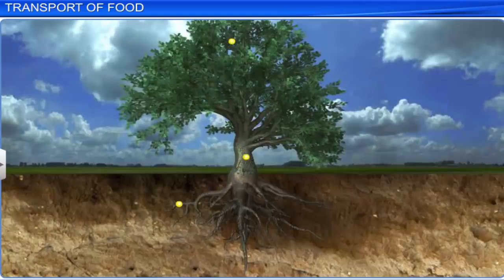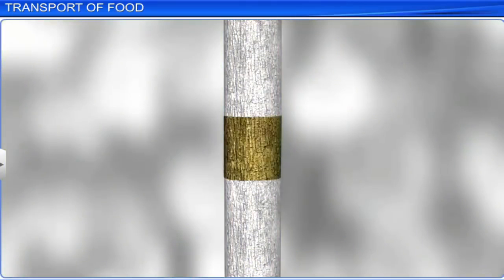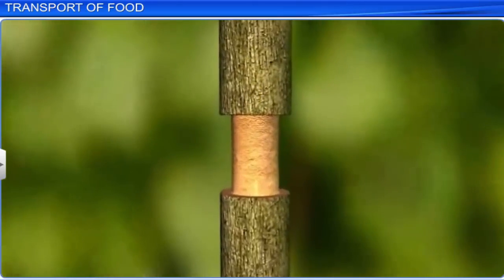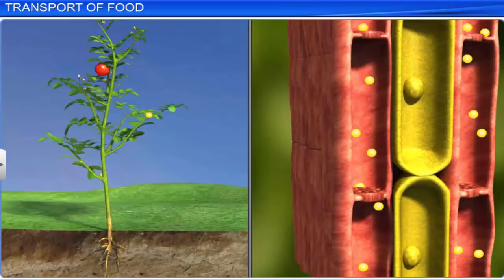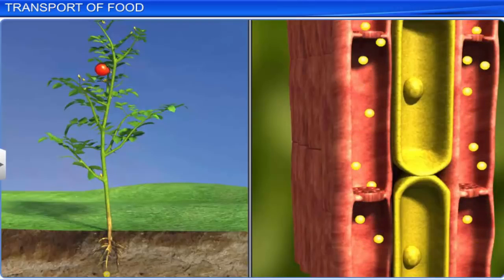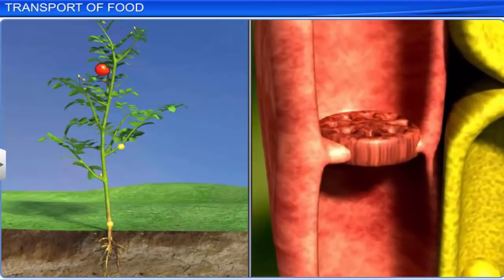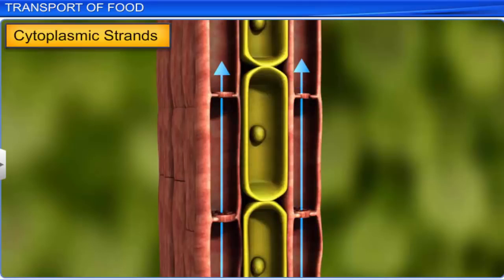A simple experiment called girdling can be used to illustrate the role of phloem cells in trees. In this experiment, a ring of tree bark up to the depth of the phloem layer is carefully removed from the trunk. The portion of the bark above the ring on the stem becomes swollen after a few weeks, because the downward movement of food doesn't take place any longer as the phloem cells have been cut. Therefore, it can be concluded that transportation of food takes place via phloem cells. Phloem tissue is made up of sieve tube cells, which are long columns with holes in their end walls. These holes are called sieve plates. Cytoplasmic strands pass through these sieve plates to form continuous filaments.